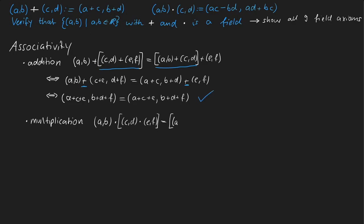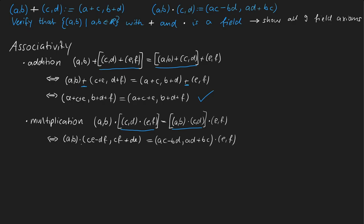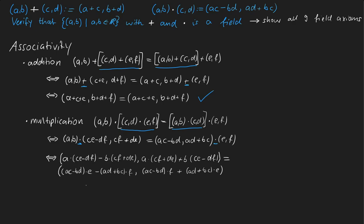Proving the associativity of multiplication is more tedious because its definition is bigger. Again we start by refactoring the terms inside the big parentheses, and if you haven't mismatched any variable names you will get the expanded term. The next step is to apply the multiplication one more time. It's important not to get confused by all the variable names, but we can simplify those terms, noting that two additions turn into a subtraction because of the two negative signs.